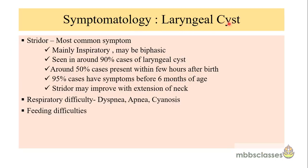The symptomatology of laryngeal cysts: stridor is the most common symptom. The type of stridor is mainly inspiratory but in some cases it may be biphasic. Stridor is present in around 90% of cases. In this group, 50% of laryngeal cyst cases present within a few hours after birth and 95% present before 6 months of age. Stridor due to laryngeal cyst may improve with extension of the neck in some cases. Other symptoms include respiratory difficulty, dyspnea, apnea, cyanosis, and feeding issues.